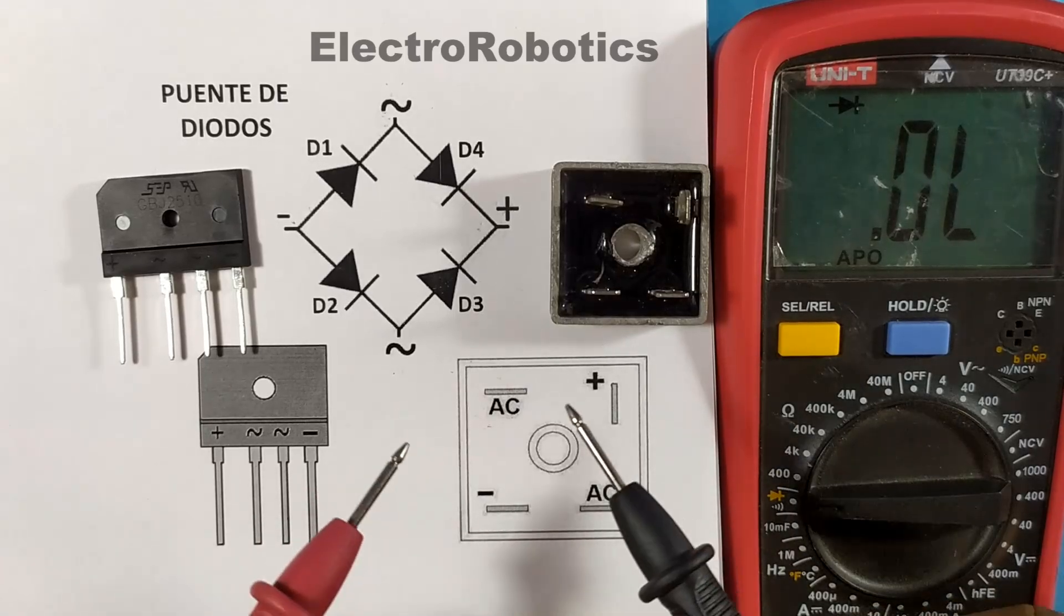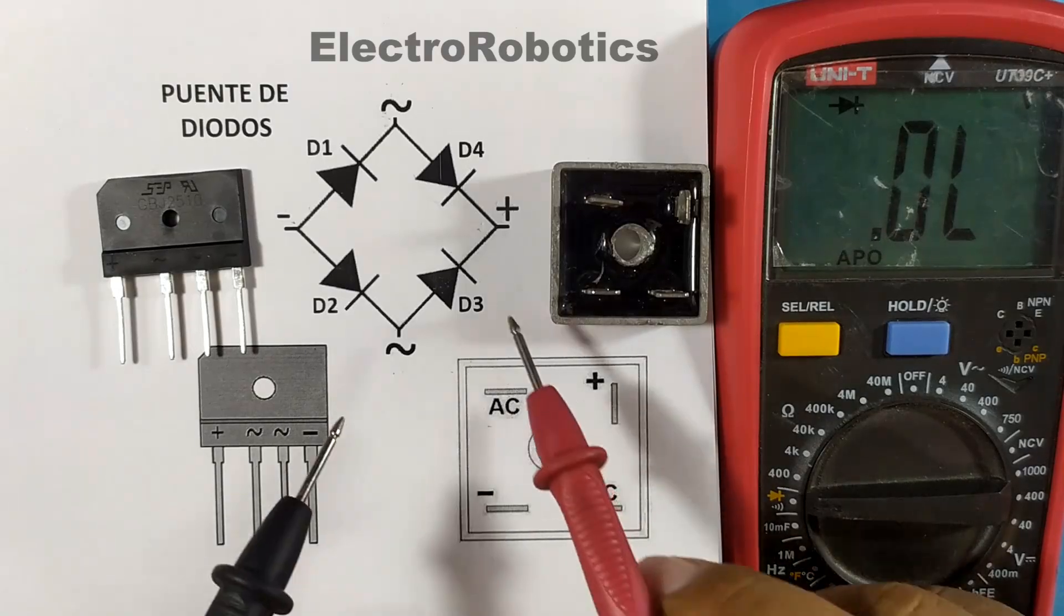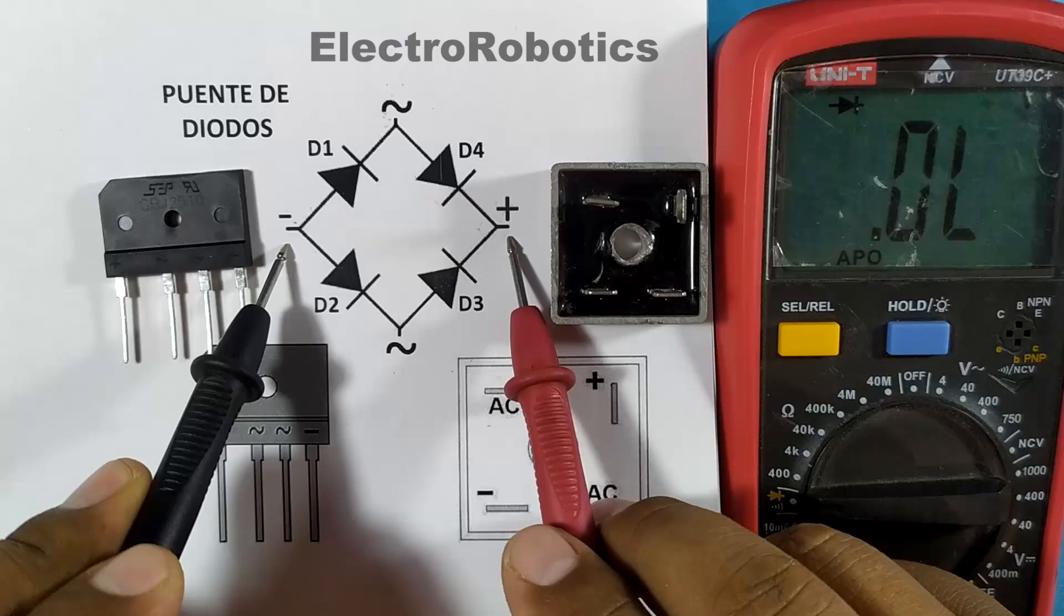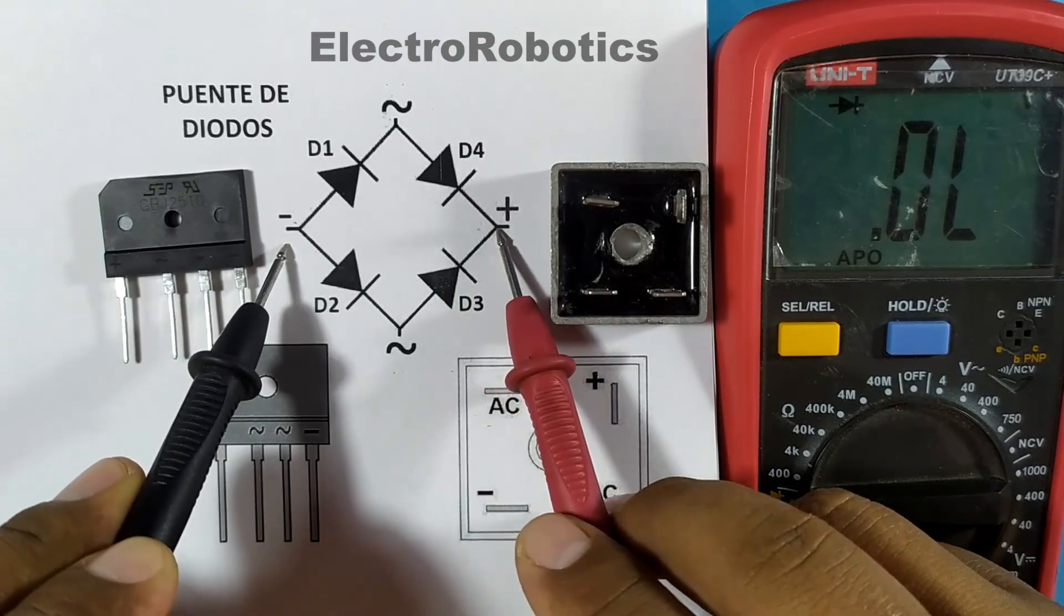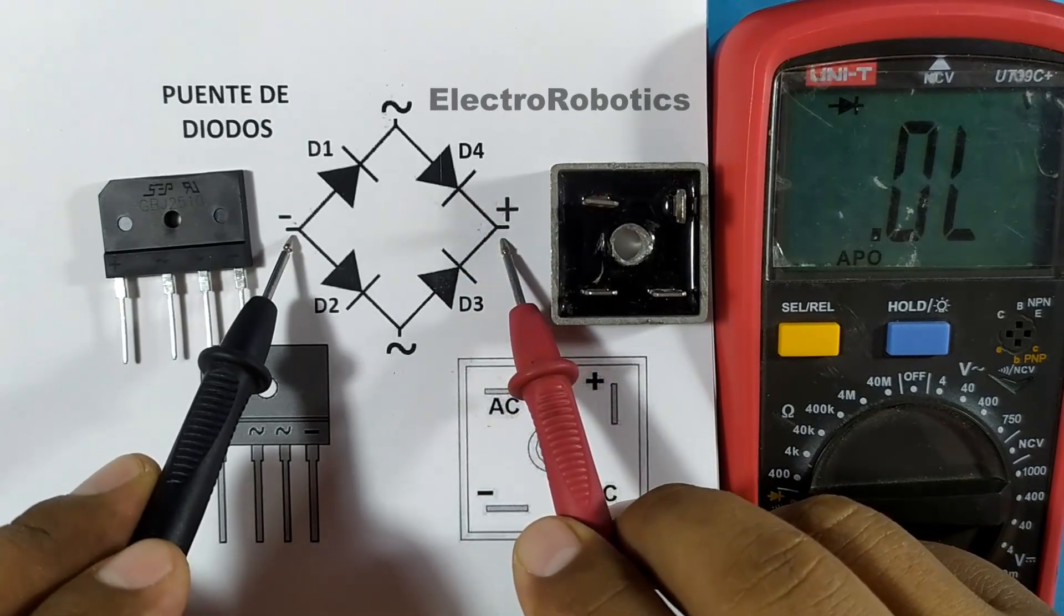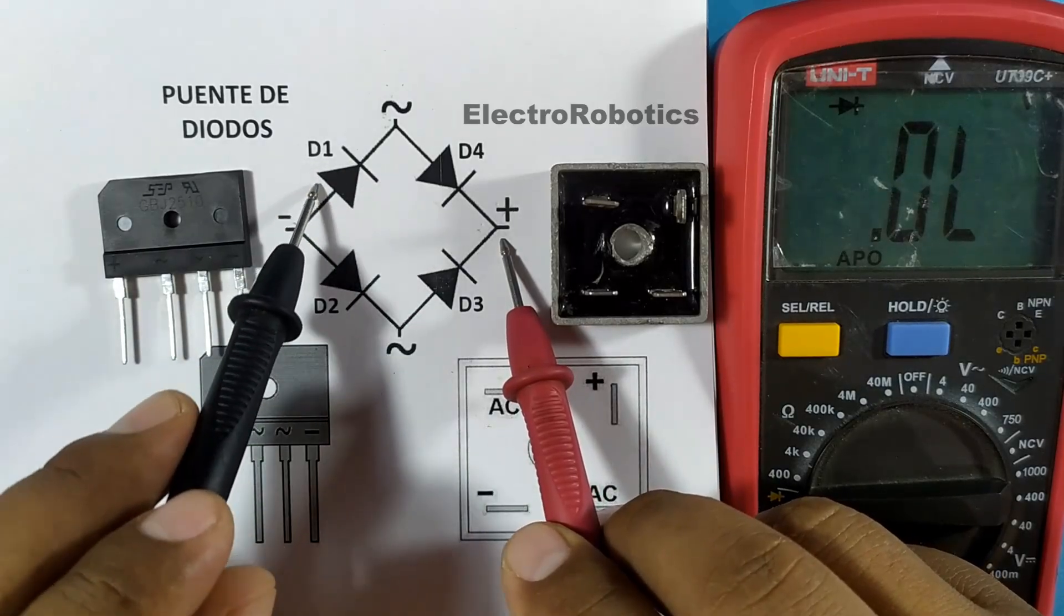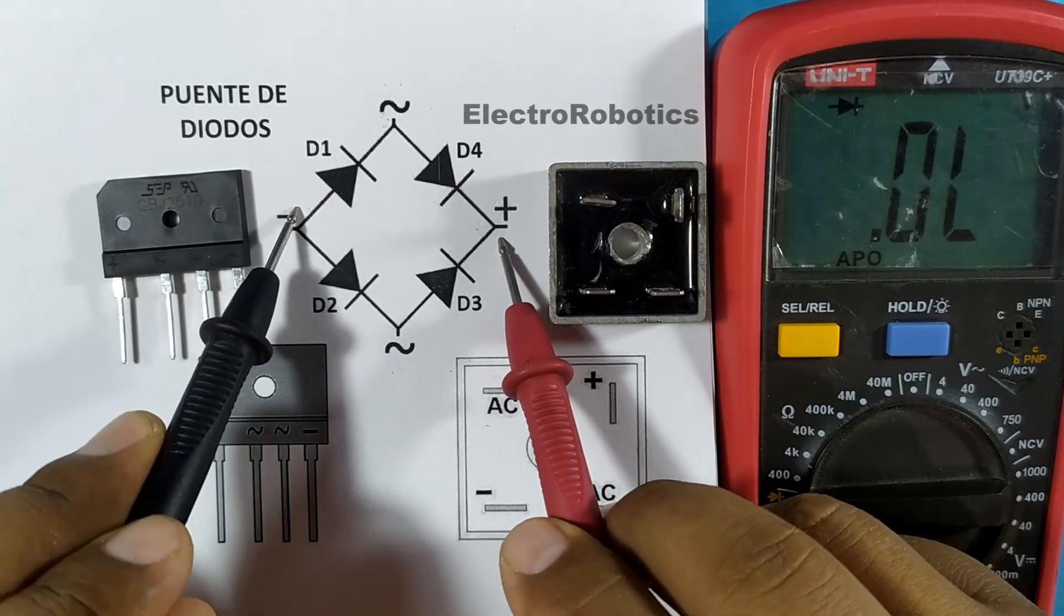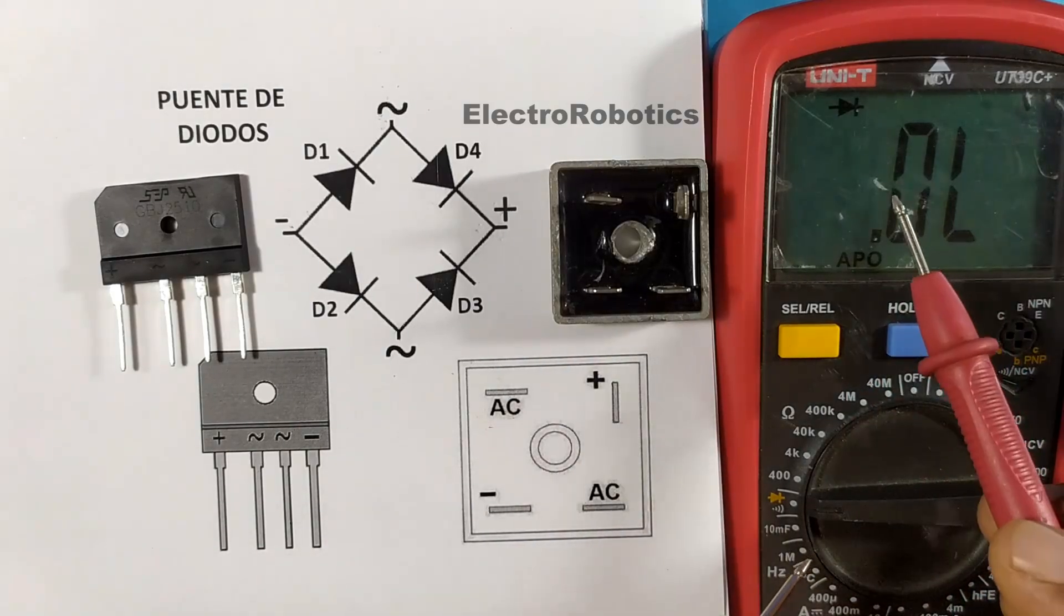In the case of the outputs, when you put it in direct, positive to positive, negative to negative. Well, if you look closely, none of the diodes can work. Since by giving positive to the cathodes, they do not work. The same in the case here. The negative cannot make the diodes work because they are anodes and the anode requires positive. So in direct on the multimeter, it will show a very large value.